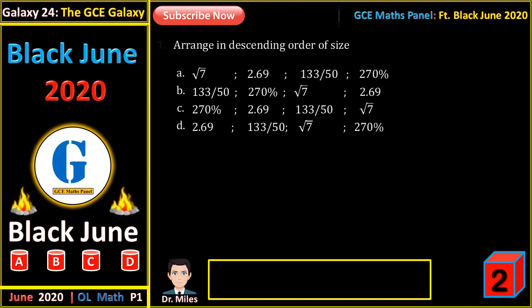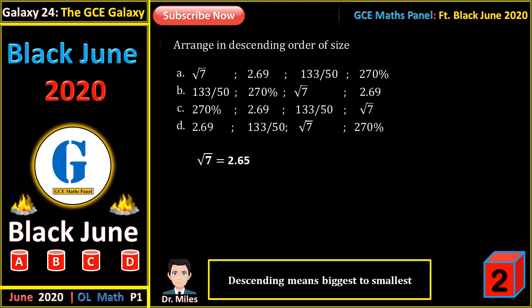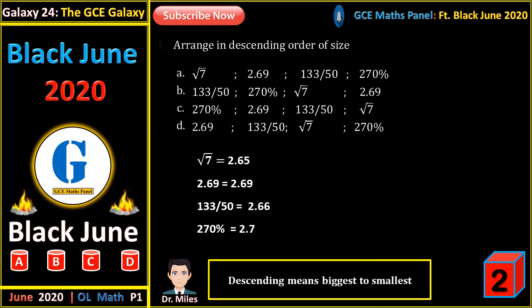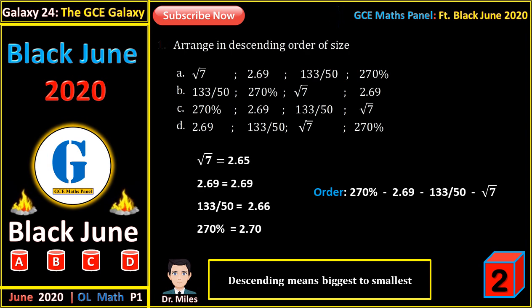Arrange in descending order of size. Descending means biggest to smallest. Root 7 is the same as 2.65. The next number is 2.69. 133 on 50 is the same as 2.66, and 270% is the same as 2.70. Now that all the numbers are in decimal form, we can see their relative sizes, and the order gives us C.